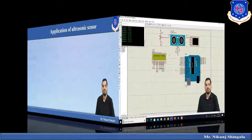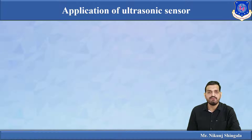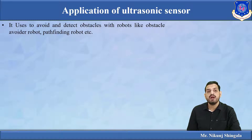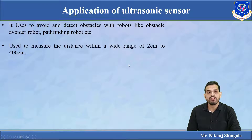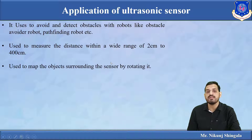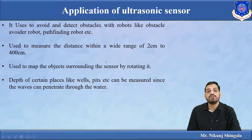The applications of ultrasonic sensor include: avoiding and detecting obstacles in robots — if a certain distance exists between an obstacle and a robot, the robot can decide to avoid or detect that object. It is used in parking-finding robots. It measures distances between 2 cm and 400 cm. It can map objects surrounding the sensor by rotating it. It can also measure the depth of places like wells and pits, since ultrasonic waves can penetrate through water.